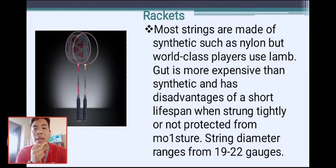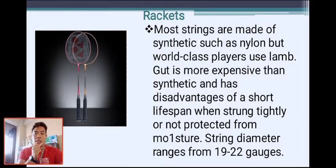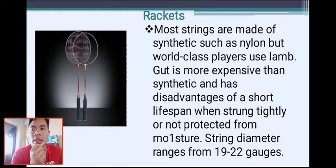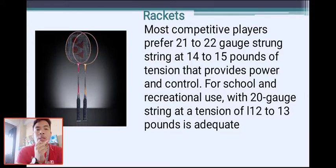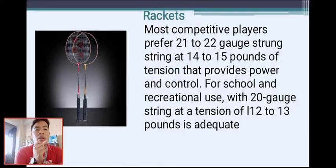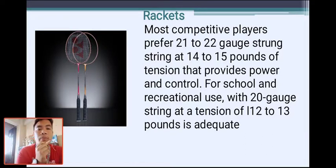If you buy gut or lamb strings used by professional players, the quality is better. But if you use synthetic materials sold at ordinary stores, it may not be ideal for racket stringing. Competitive players prefer 21 to 22 gauge string at 14 to 15 pounds of tension for power and control.